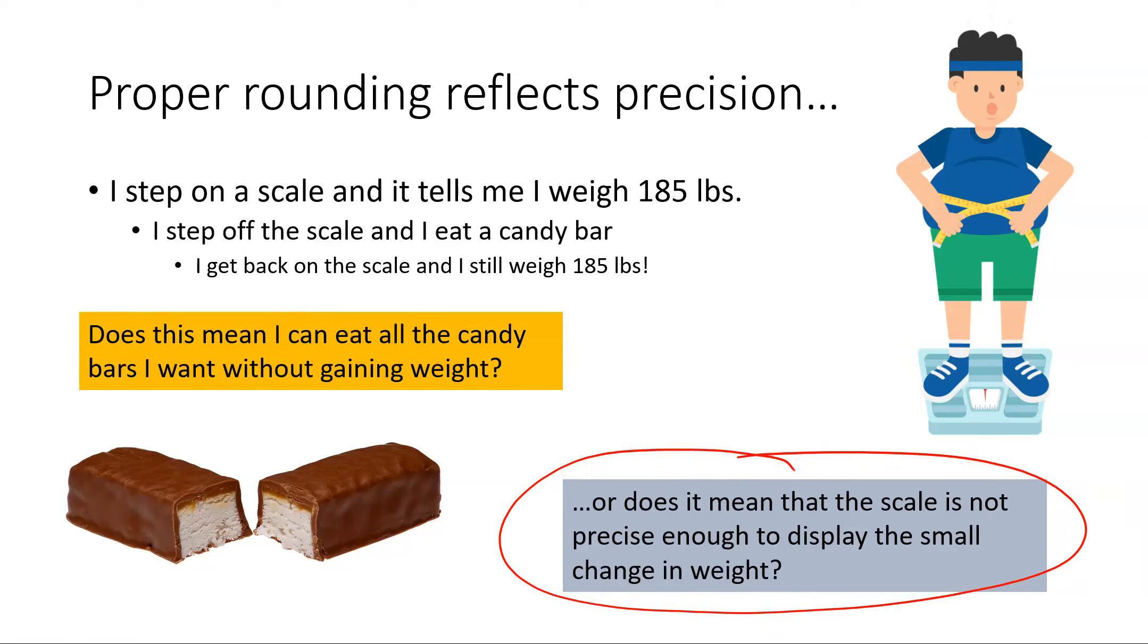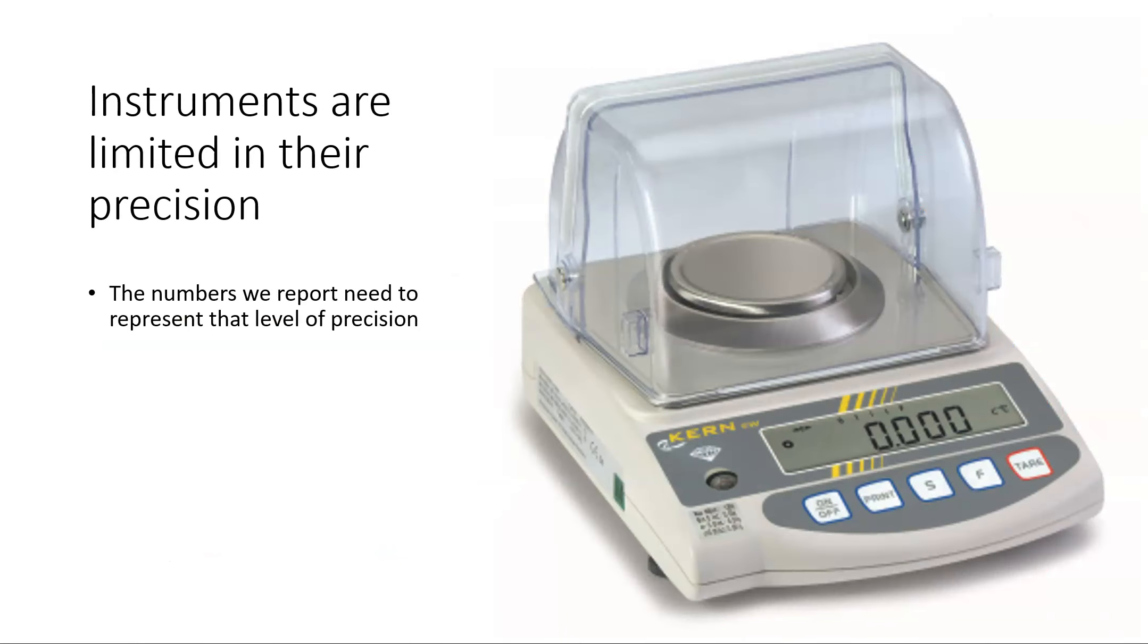Now instruments that we use in science are limited in their precision. This is a pretty darn fancy balance right here. This goes all the way down to one one-thousandth of a gram. That's a pretty darn sensitive balance. Now that balance, if I was standing on it, would certainly detect that candy bar. And in fact, it would probably detect it here, here, and here, maybe even at that point right there if it was measuring in grams.